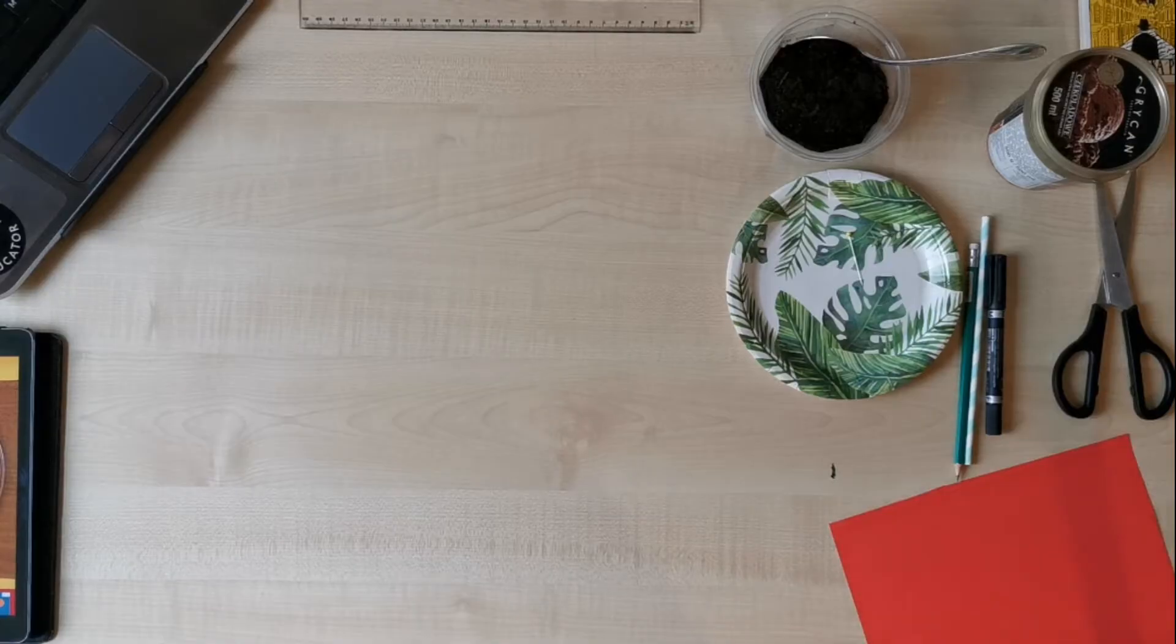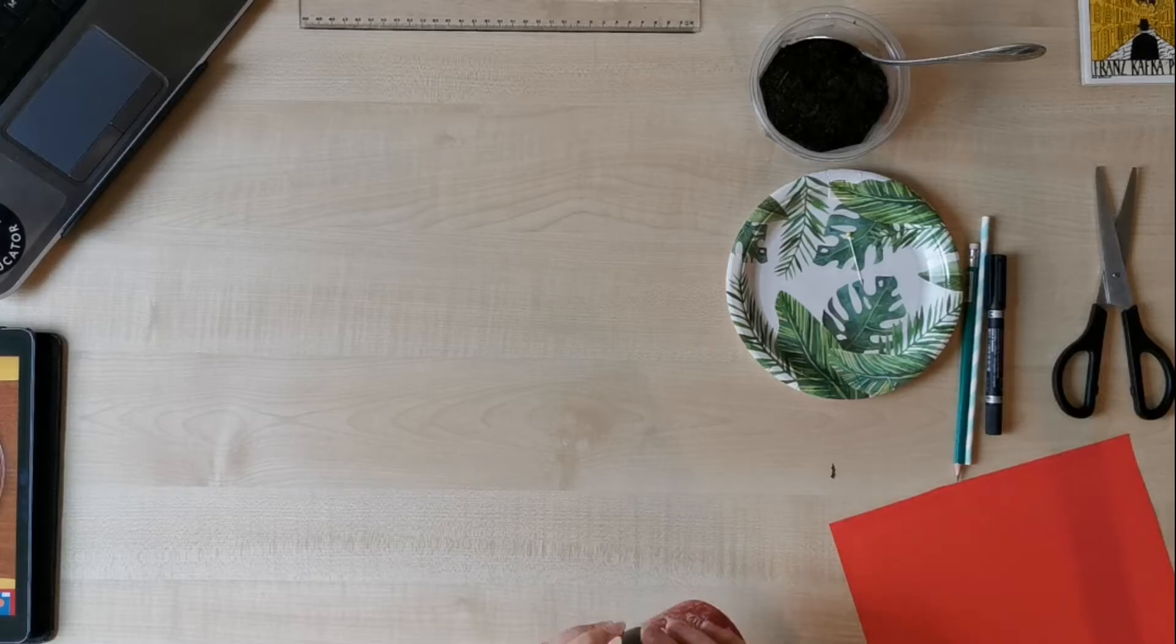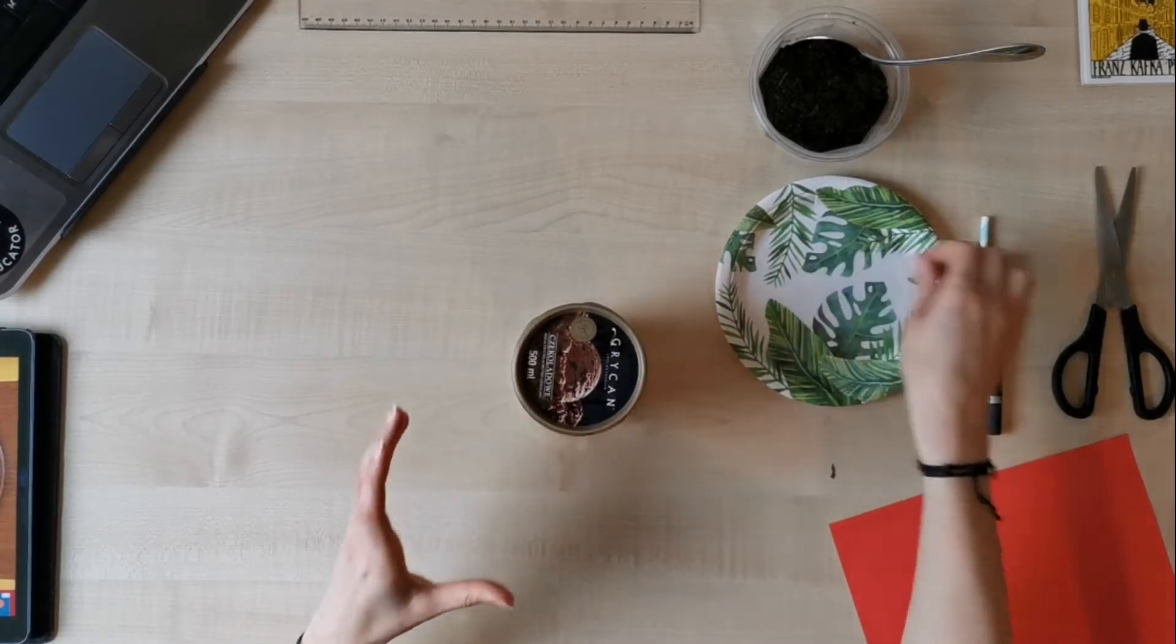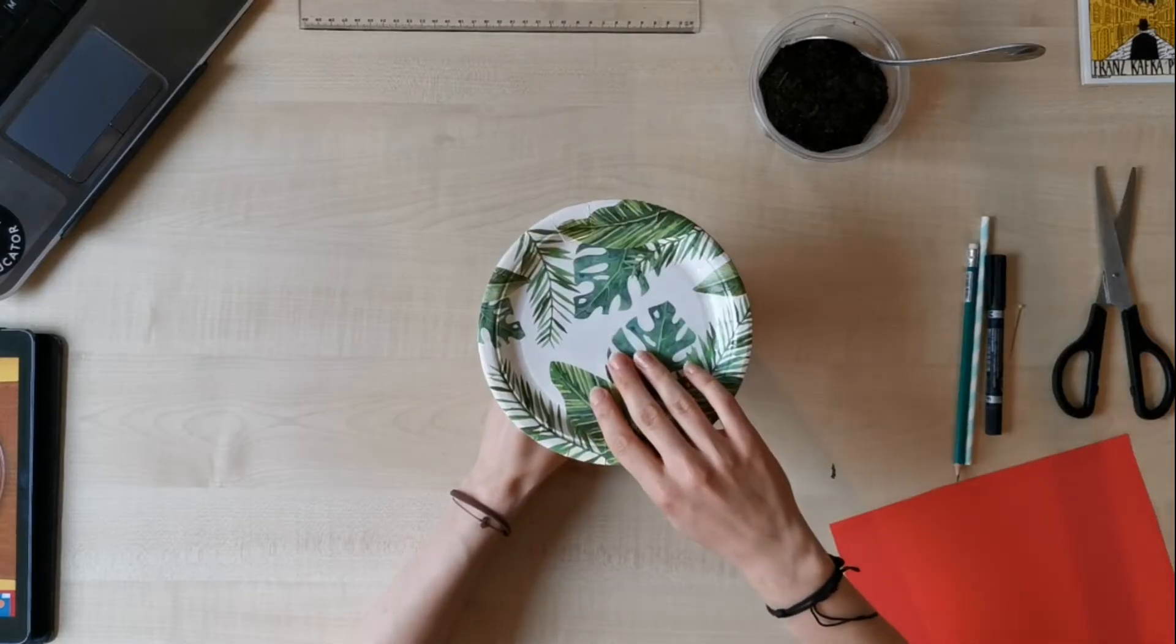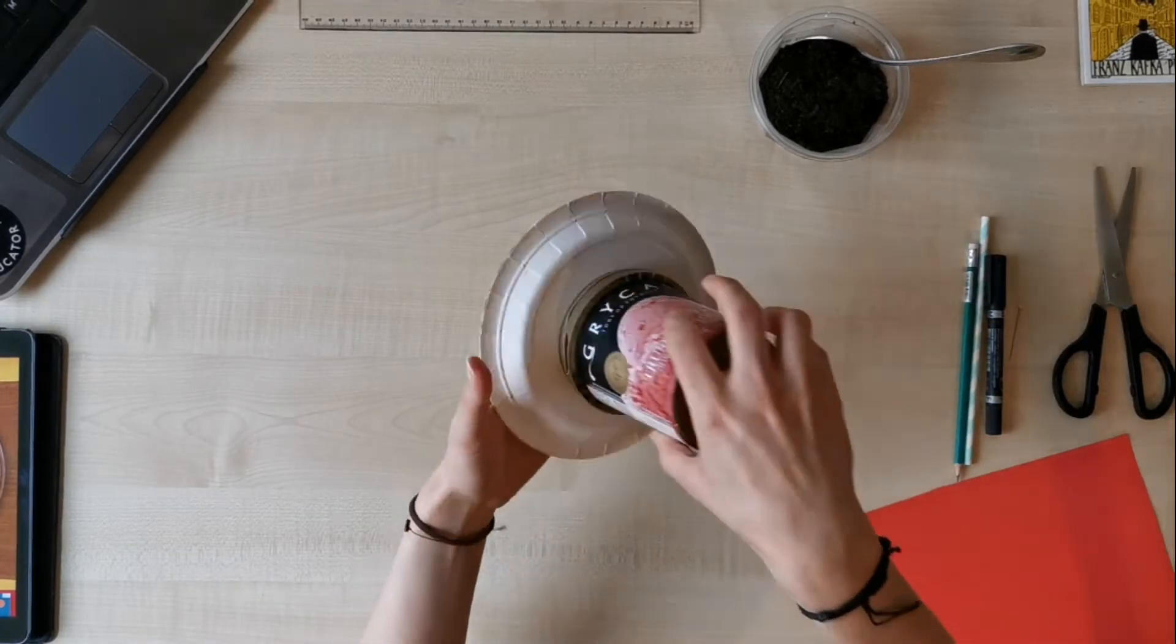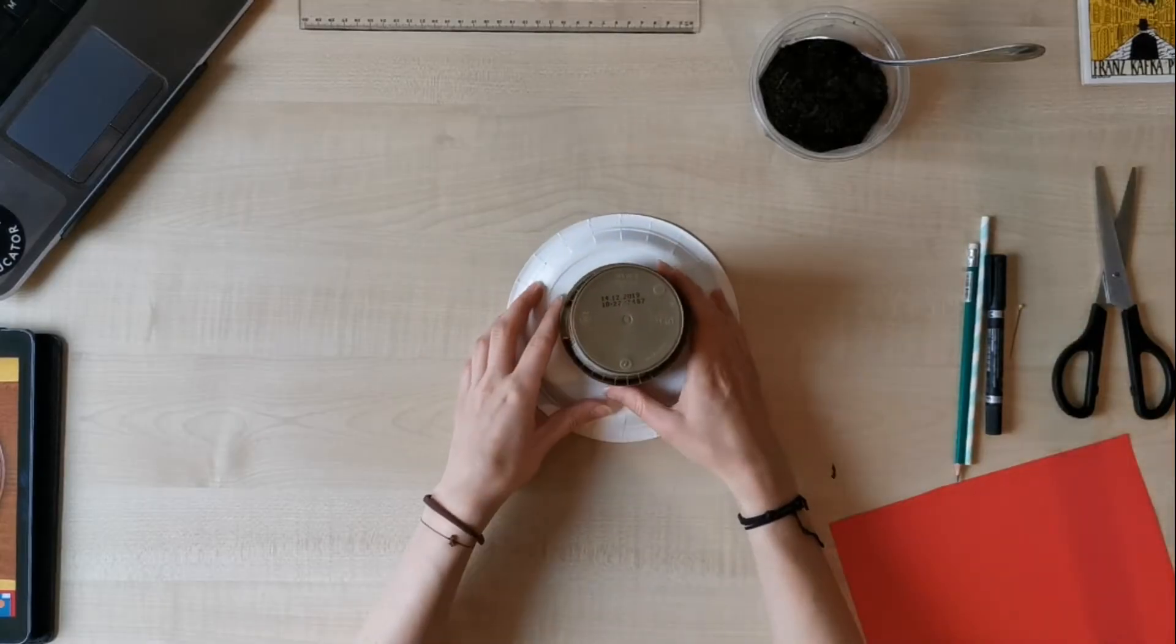We are going to start by putting the paper plate on the plastic container. So we have the plastic container. We are putting the paper plate on it and we have to turn all of it upside down. Like this.